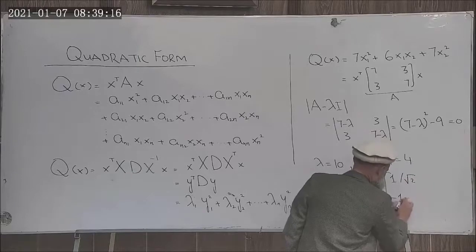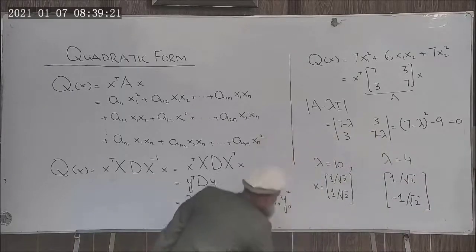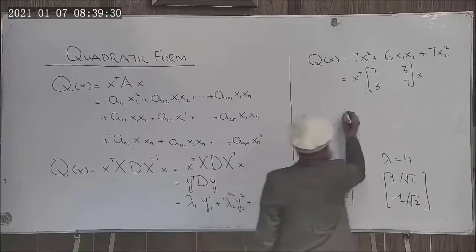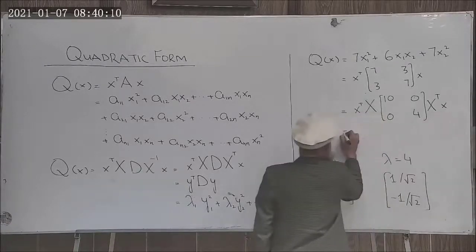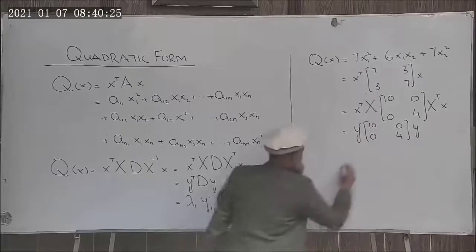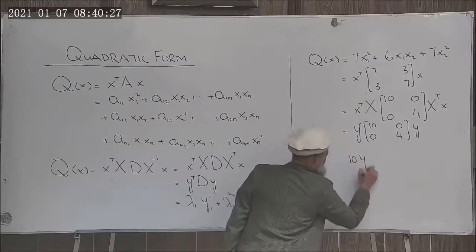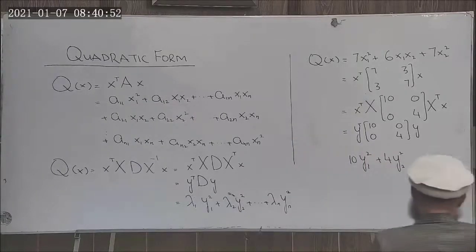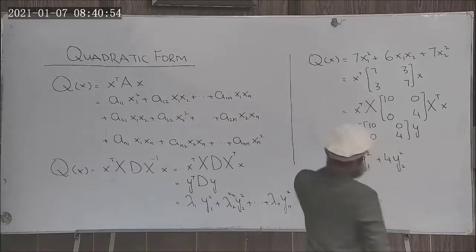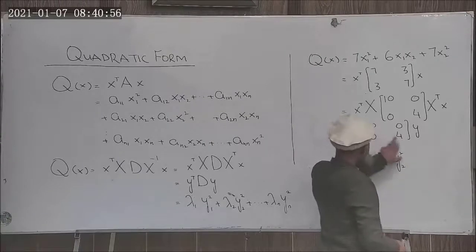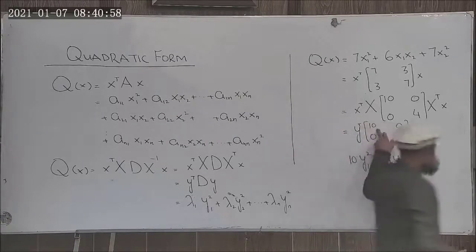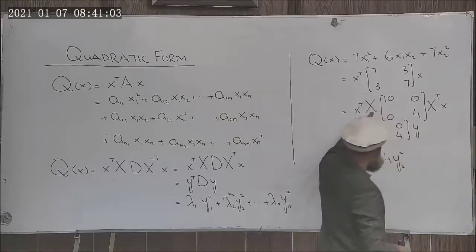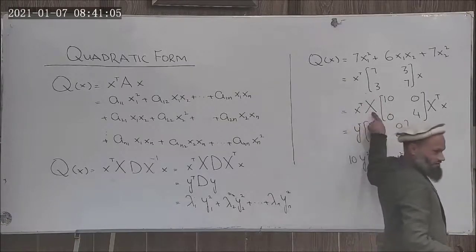Corresponding to lambda equal to 4, the eigenvector is determined which is 1 over square root of 2 and minus 1 over square root of 2. Hence this matrix, this quadratic expression is the same as 10 y1 square plus 4 y2 square.